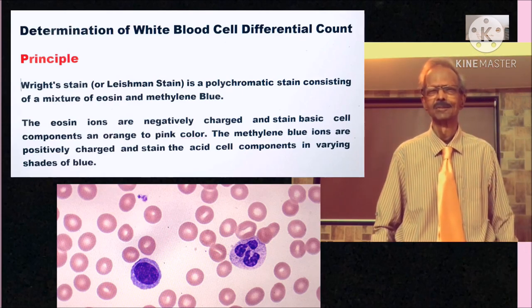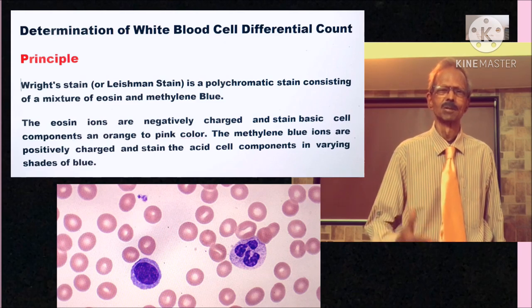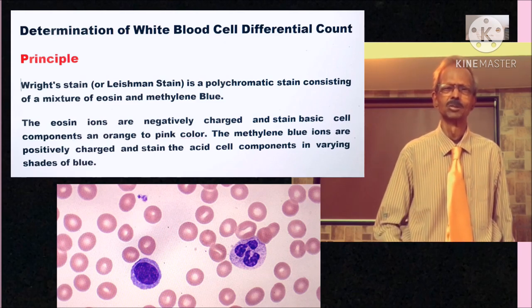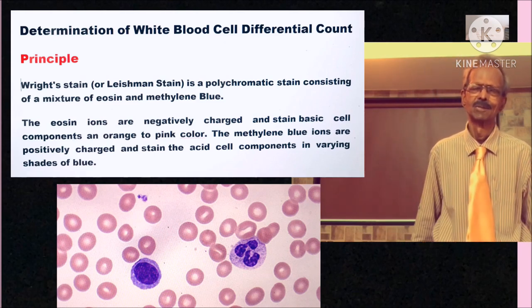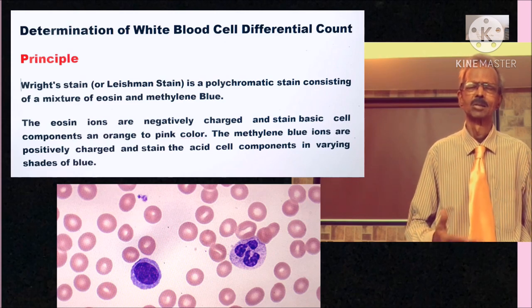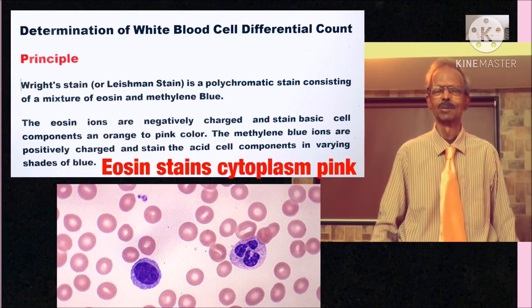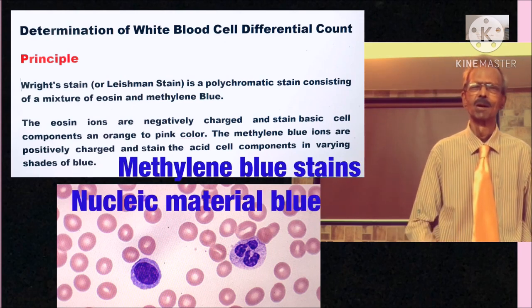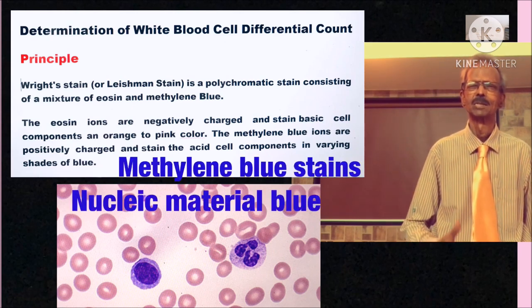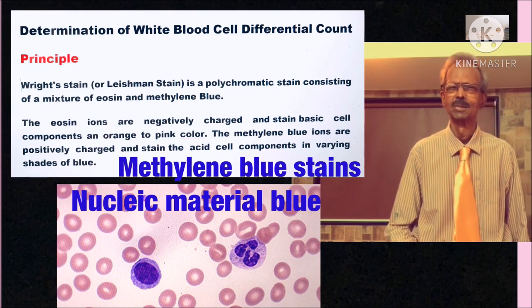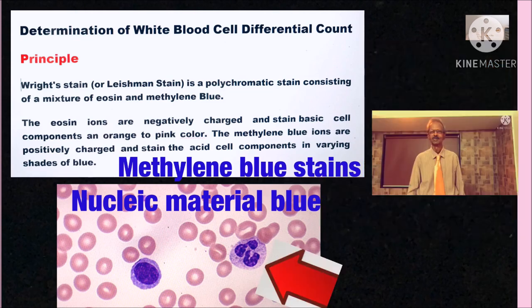And about the principles of this staining technique. The staining solution contains eosin which is acidic stain and it stains the cytoplasm which is basic. And it also contains methylene blue which is a basic component and it stains the acidic material in the nucleus and that is nucleic acid.